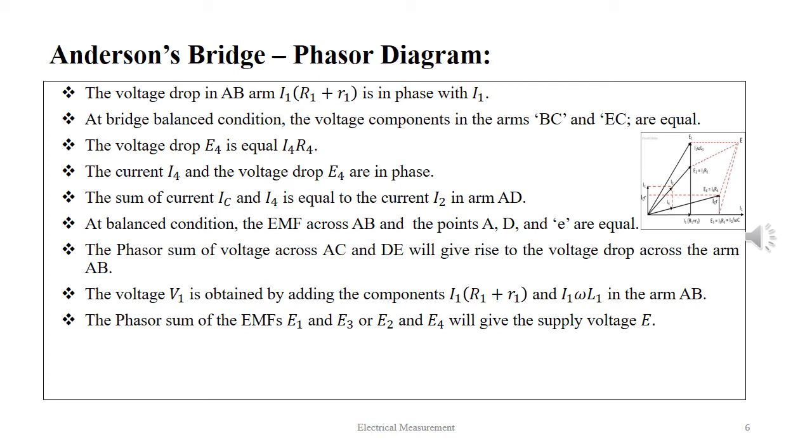The phasor sum of voltage across AC and D will give rise to the voltage drop across the arm AB. The voltage V1 is obtained by adding the components I1 into capital R1 plus small r1 and I1 omega L1 in the arm AB.